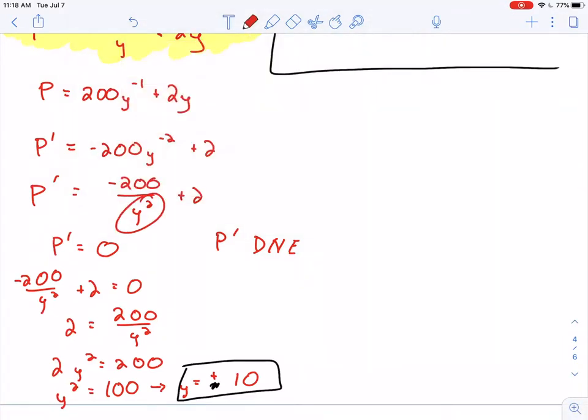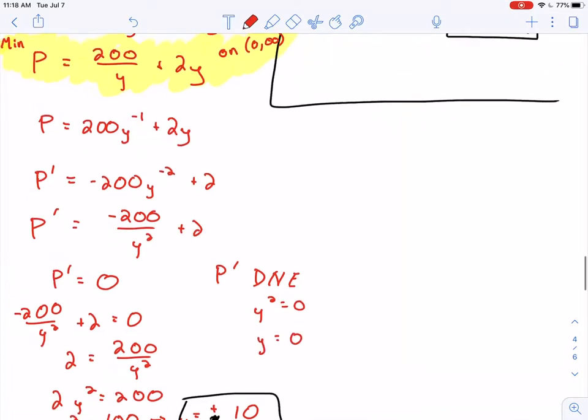We could think about this a couple different ways. Here, I would just take the denominator, right? Here we have a rational function. Take that denominator, y squared, set it equal to 0. If I take the square root of each side, I have y equals 0. Double check. Is that in our domain?